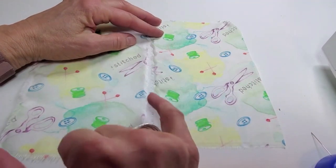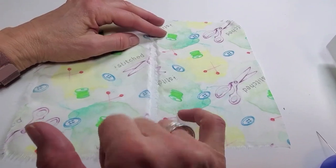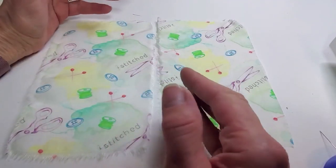A French seam is a beautiful way to finish the edge of a sheer fabric where you don't want serging or other seam finishes to show.